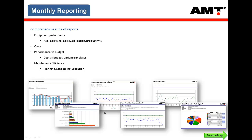Monthly reporting in AMT is split into equipment performance reports — availability, reliability, utilization, productivity — cost analysis reports including cost versus budget, and maintenance efficiency reports such as planning reports, backlog aging, service accuracy, and quality of work performance. An example of the latter would be mean time to first stoppage after PM. We try to have KPI reports measuring the outputs of the process — equipment performance and costs — but also performance KPI reports around the maintenance process, particularly planning and execution of work.